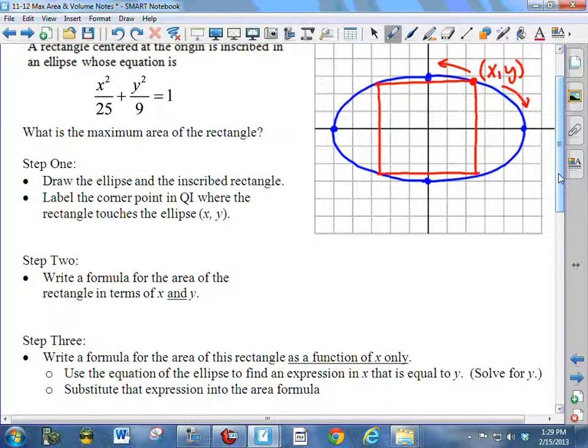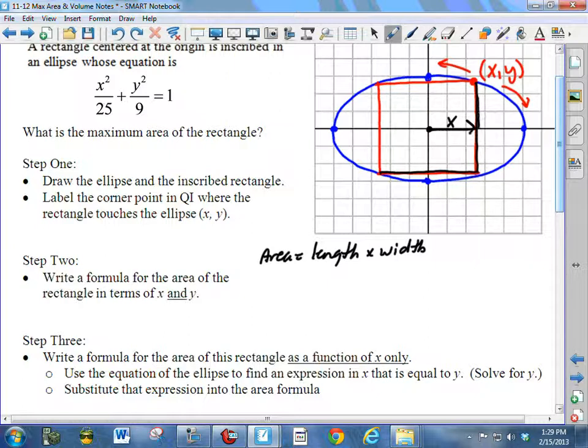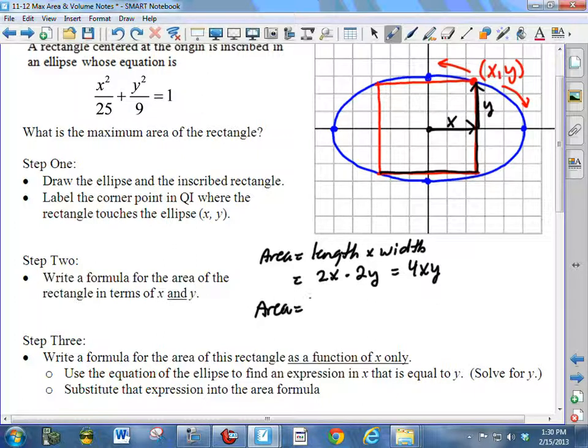Now step two is to write a formula for the area of the rectangle in terms of X and Y. So you know that area is equal to length times width or base times height or however you want to express that. In other words, I need to know this dimension and this dimension. I need to know the two sides. Well, if this point is the point XY then we know this distance from the center in the X direction is X and this distance from the X axis up to the point is Y. So if I want to find the dimensions of the rectangle, I have to recognize that the width of the rectangle is 2X and the height is 2Y. So the area is going to be 2X times 2Y or 4XY. So area is equal to 4XY.